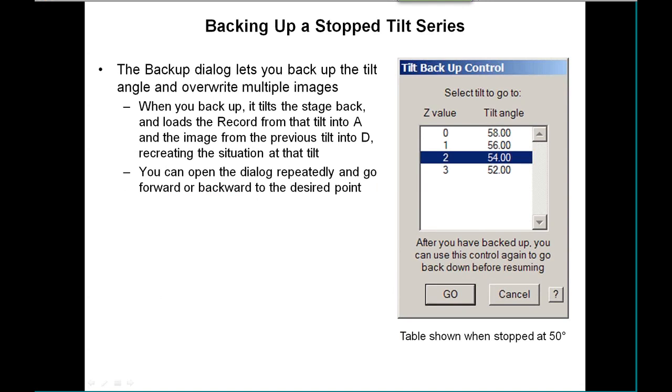Backing up is useful if you leave the room, come back, and see that it screwed up five tilts ago. You can open up this dialog and dial up any previous tilt that's listed here. Push the button and it will reload the record image from that tilt and reload the image from the previous tilt into buffer D, so it's ready for alignment. This basically recreates the situation that was present at that tilt, and you can actually go back and forth.